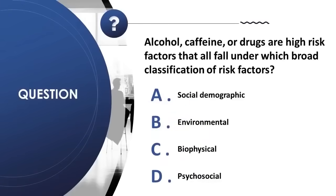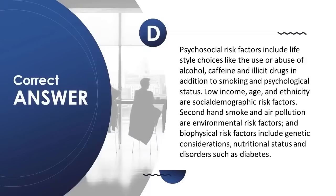Question 9: Alcohol, caffeine, or drugs fall under which broad classification of risk factors? A) social demographic, B) environmental, C) biophysical, D) psychosocial. Correct answer is D. Psychosocial risk factors include lifestyle choices like use or abuse of alcohol, caffeine, and illicit drugs, as well as smoking and psychological status. Low income, age, and ethnicity are social demographic risk factors. Secondhand smoke and air pollution are environmental. Biophysical risk factors include genetic considerations, nutritional status, and disorders such as diabetes.